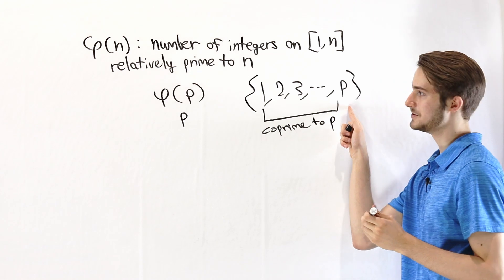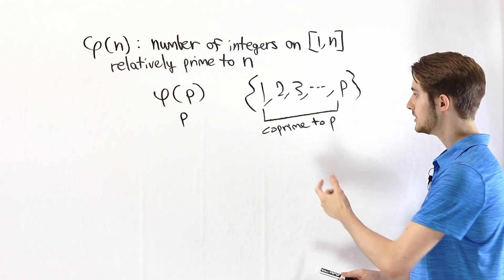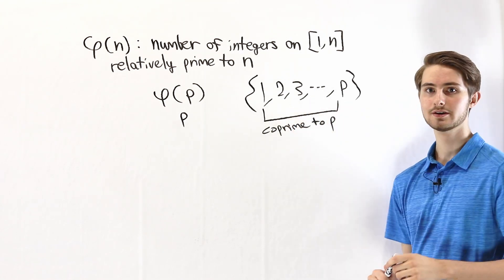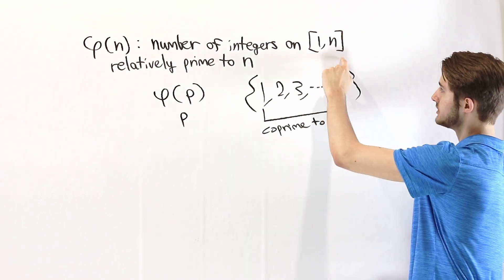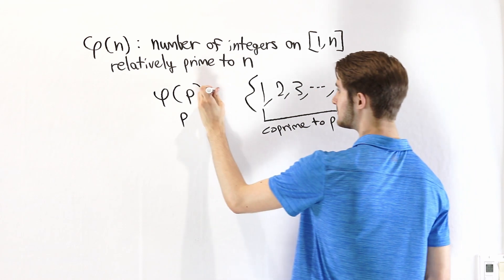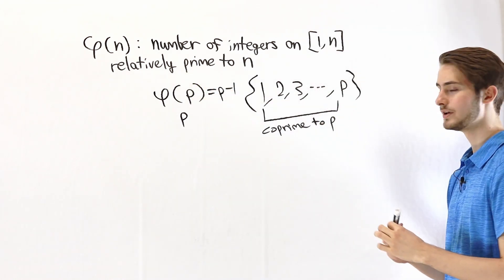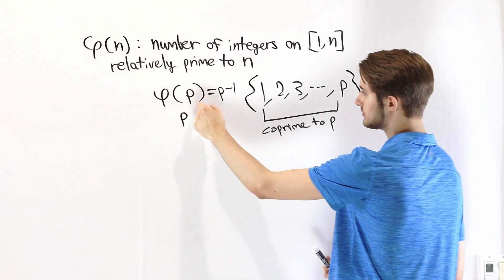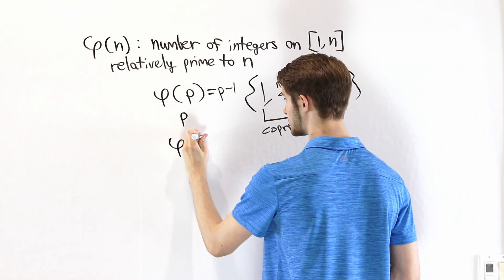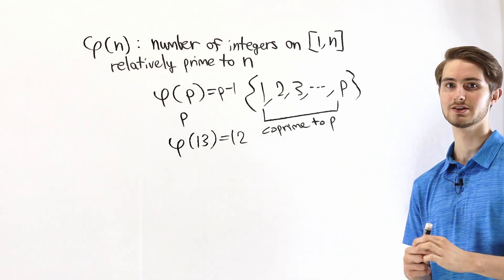Of course P is not coprime to P because it's equal to itself. So we want to find the number of integers that are coprime to P — that's all the numbers on the interval 1 to P except for P itself. The number of integers in that interval is just P minus 1, since we're not including P. So for any prime number, the totient function of that prime number is equal to P minus 1. For example, the totient function of 13 is equal to 12, since 13 is a prime number.